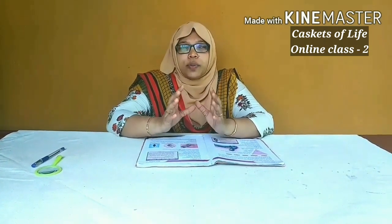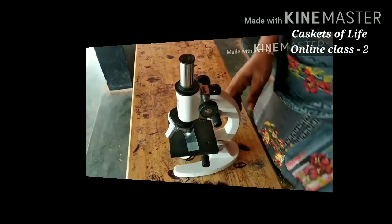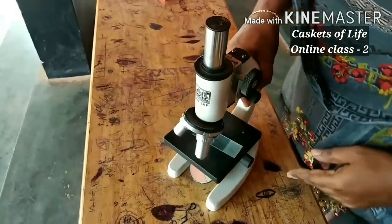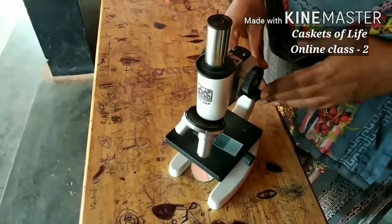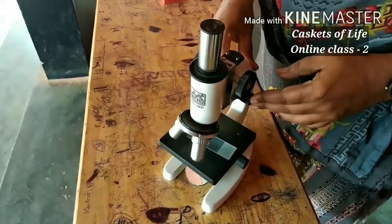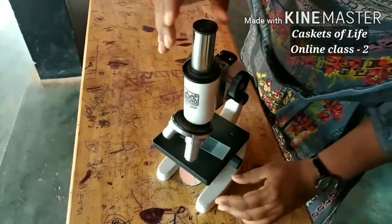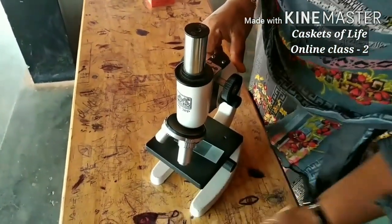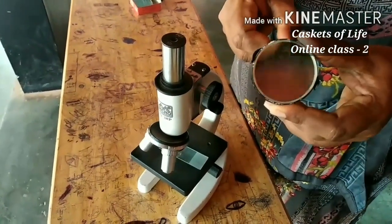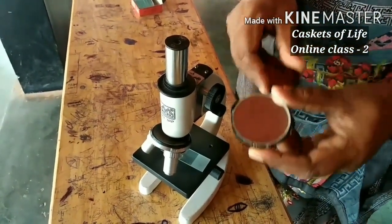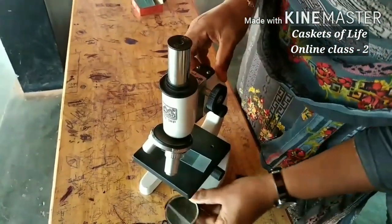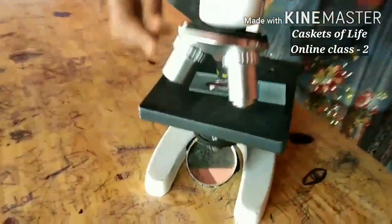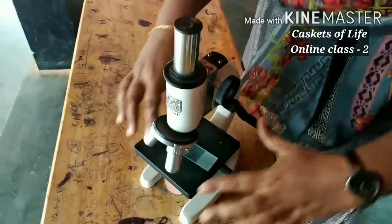This is a common microscope through which we are going to observe our microorganisms. Before that, let's familiarize ourselves with the different parts of this microscope. This is a mirror. This mirror is used for focusing light into the object — it is used for focusing light to the microscope.